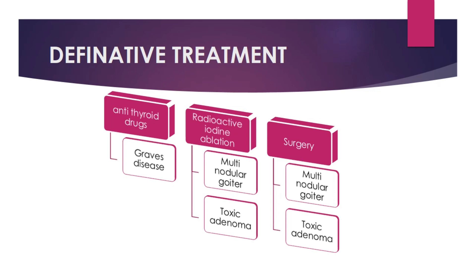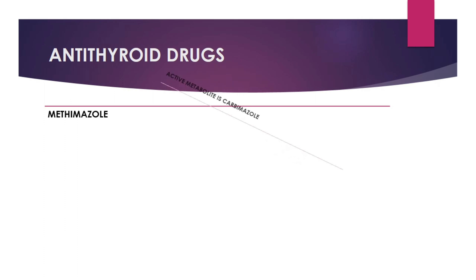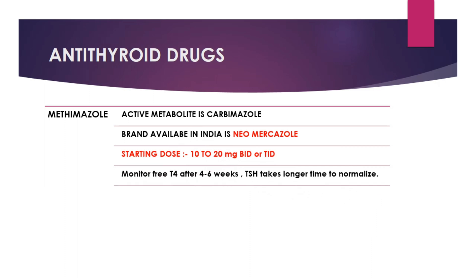We are going to discuss antithyroid drugs. The most commonly used drug is methimazole. The active metabolite of methimazole is carbamazole. The brand available in India for carbamazole is Neomercazole. The starting dose for hyperthyroidism is 10 to 20 mg twice or three times daily. After starting Neomercazole, we monitor free T4 after 4 to 6 weeks, because TSH takes longer to normalize — it remains suppressed for a longer duration. So we cannot monitor TSH for dose titration; we monitor free T4 instead.